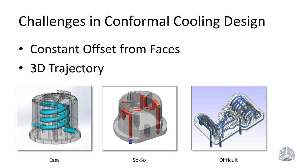There are certainly some challenges involved in conformal cooling designs. Because we're not doing just straight drill lines, we have to think about how we're going about it. Having a constant offset from the core face is one of the most crucial features, as it's what helps us uniformly get the heat out. Often that means following a 3D trajectory, like the helical waterline shooting up and across. Sometimes the geometry forces you to take what it gives you, like jumping up and diving down to avoid deep ribs. Sometimes it's just difficult because of the part geometry.